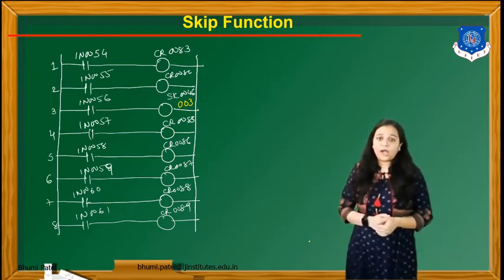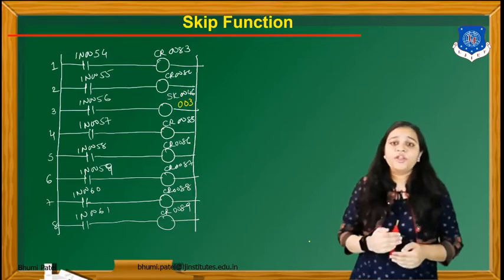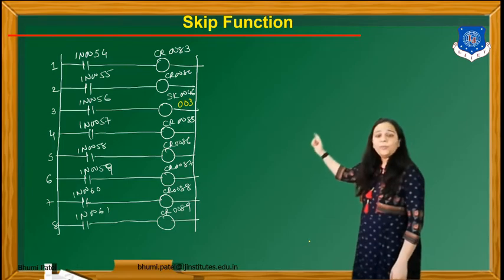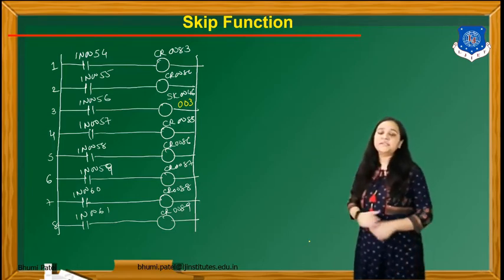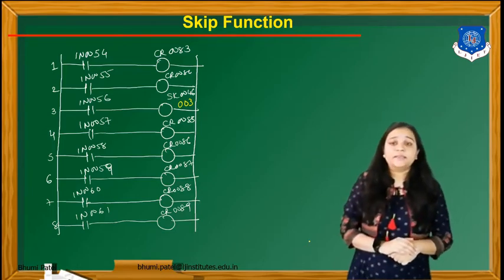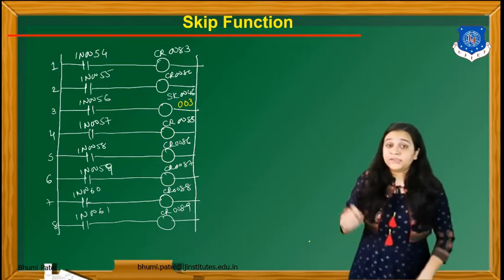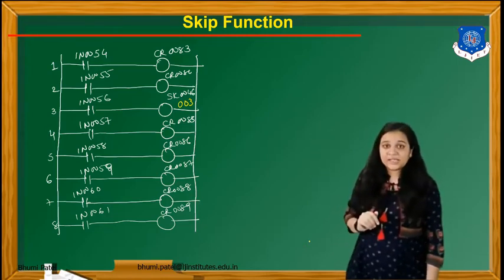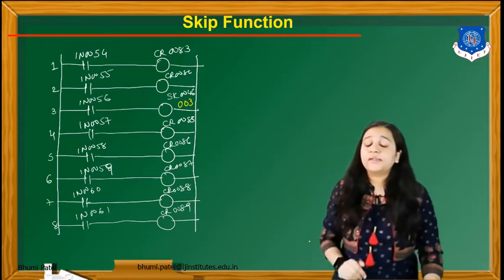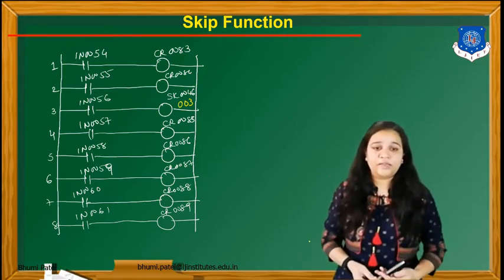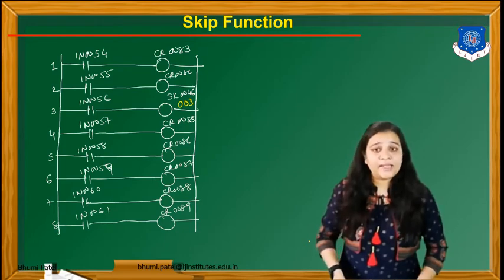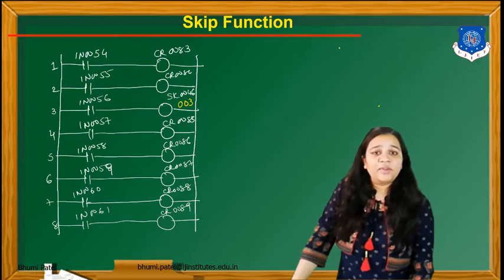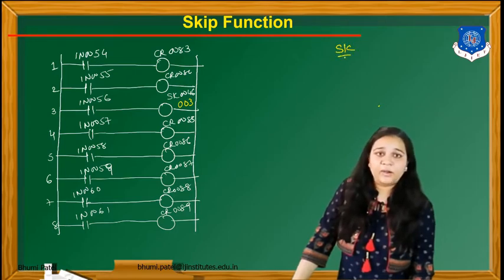Now, the different thing is that in rung number 3, you can see that input IN0056 is applied, and in the output coil they write SK0046. SK is the command for the skip function. Whenever we need to skip a line or rung for this particular system, we use SK0046.